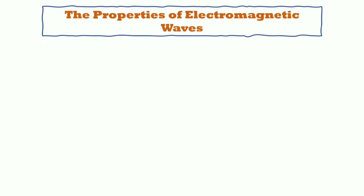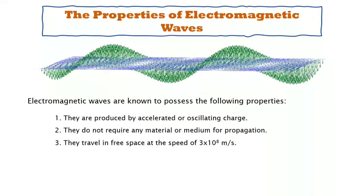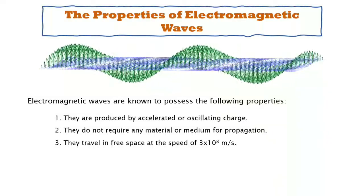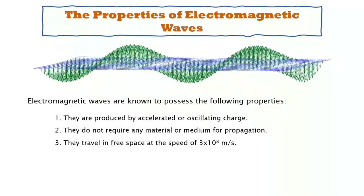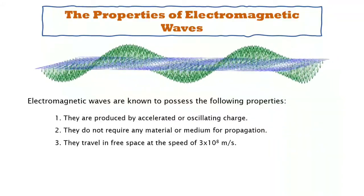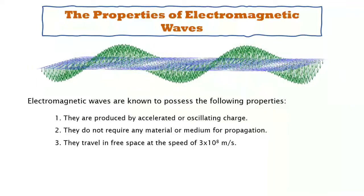We have here the properties of electromagnetic waves. Electromagnetic waves are known to possess the following properties: First, they are produced by accelerated or oscillating charge. Second, they do not require any material or medium for propagation. And third, they travel in free space at the speed of 3 times 10 to the 8th power meters per second.